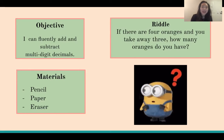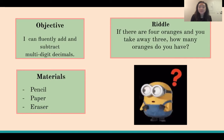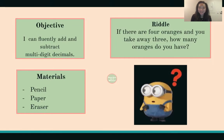In the meantime, we'll do the riddle. Today's riddle is: if there are four oranges and you take away three, how many oranges do you have left? I'll give you a few minutes, and then we'll come back and go over the answer.